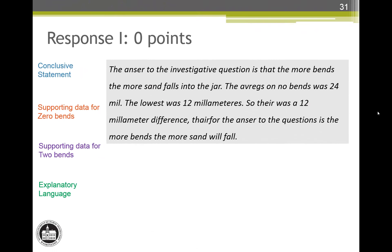Response I earned zero score points. The first sentence gives an attempt at a conclusive statement but the student is wrong — the more bends the more sand? As a result of that, note number 2 applies and none of the other attributes can be earned. The data for zero bends is correct and the student even found some derived data, but conclusive statement attribute note 2 cancels all of that and the response earns zero score points. As a side note, the third sentence — the lowest was 12 millimeters — is an example of giving the lowest number without connecting it to a specific condition of the manipulated variable.